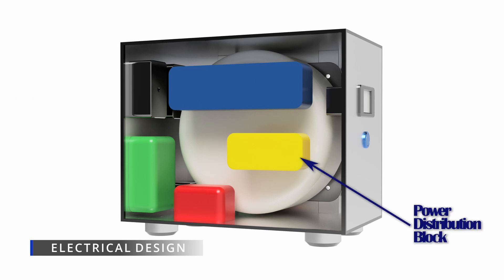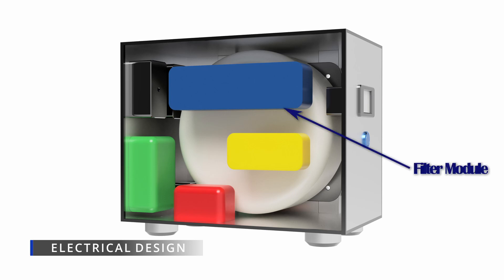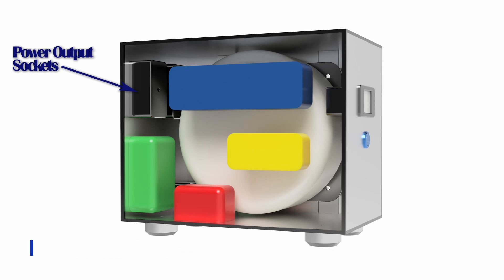From the output of the transformer, power is fed into a distribution block. One output is directed to the digital meter for showing the operation status of the device. Another output is fed into a premium-grade filter then connected to two of the three sets of the output sockets. The final output is connected directly to the remaining set of output socket bypassing the filter so as to allow the high-current devices, such as power amplifiers, to have unrestricted power supply from the transformer.